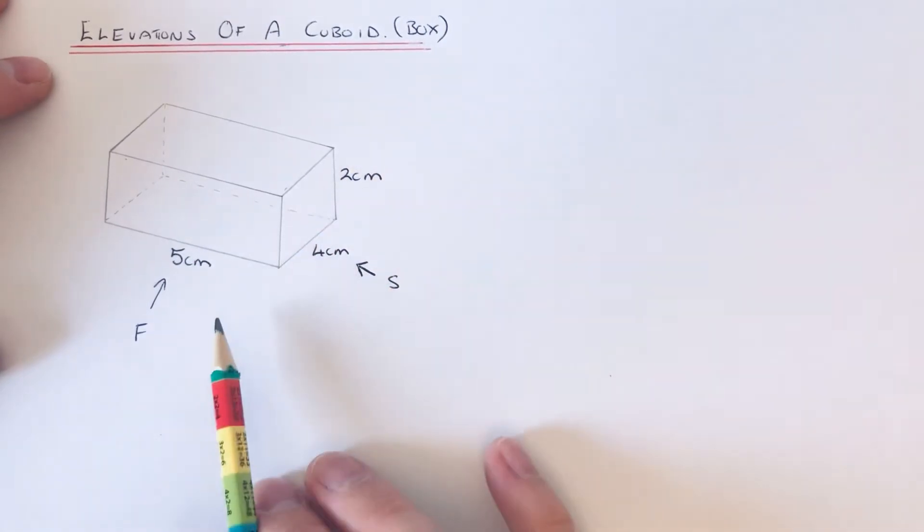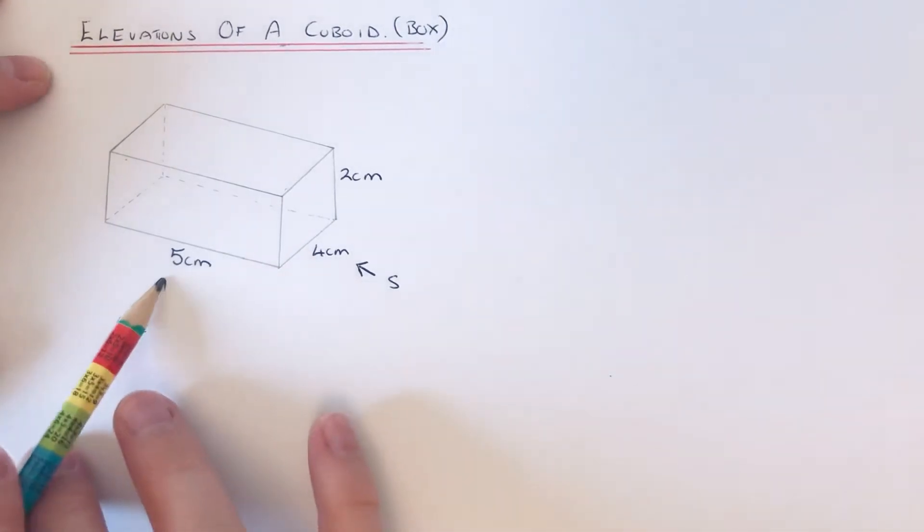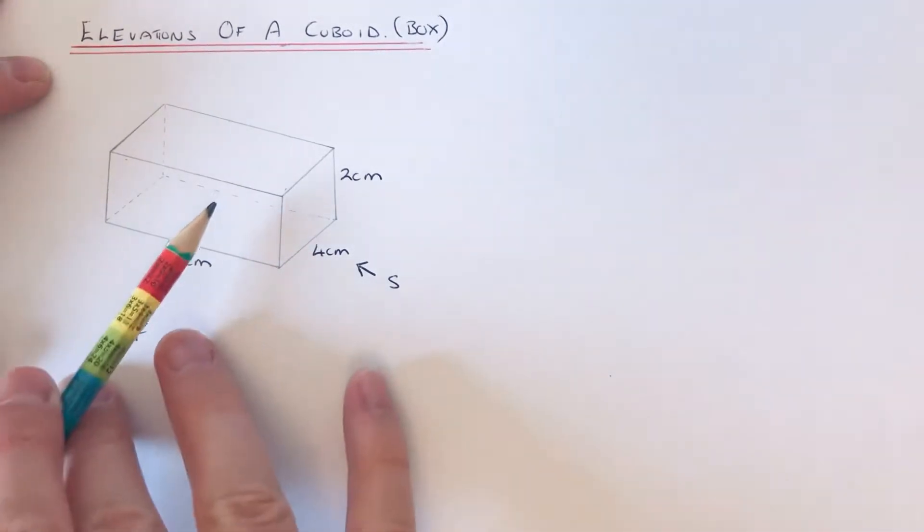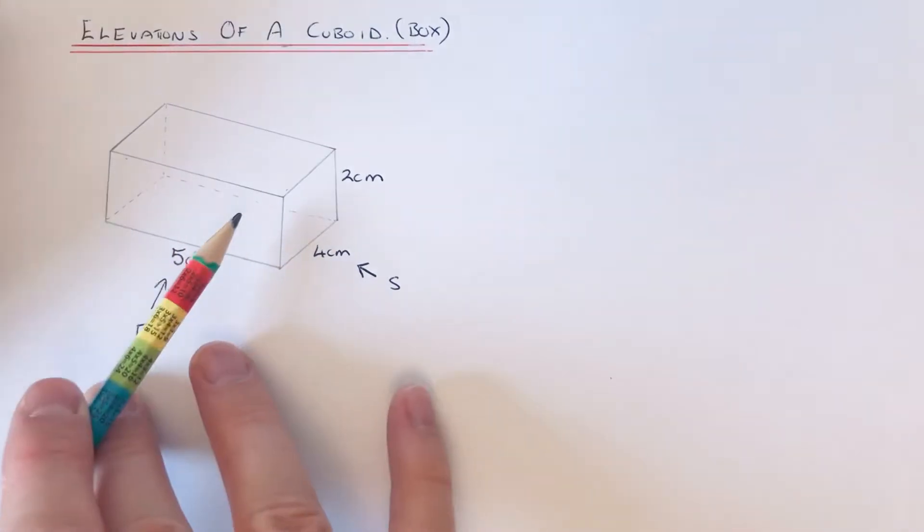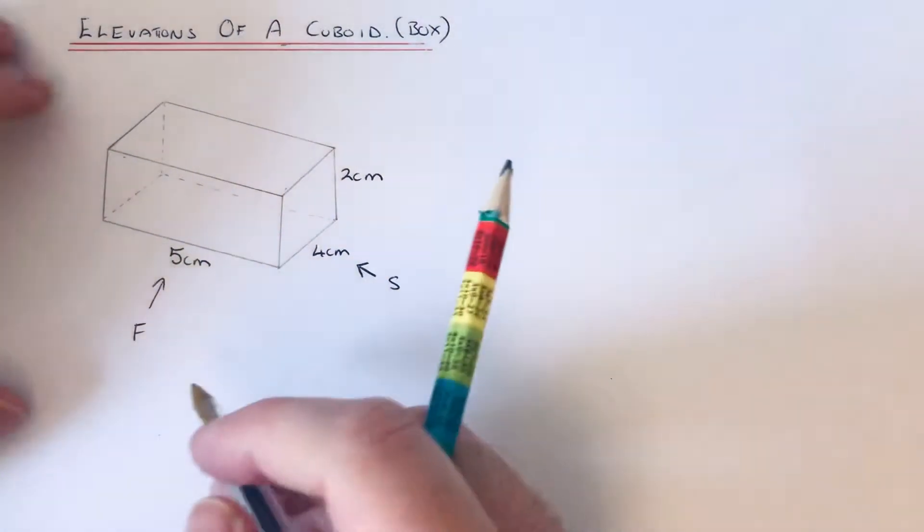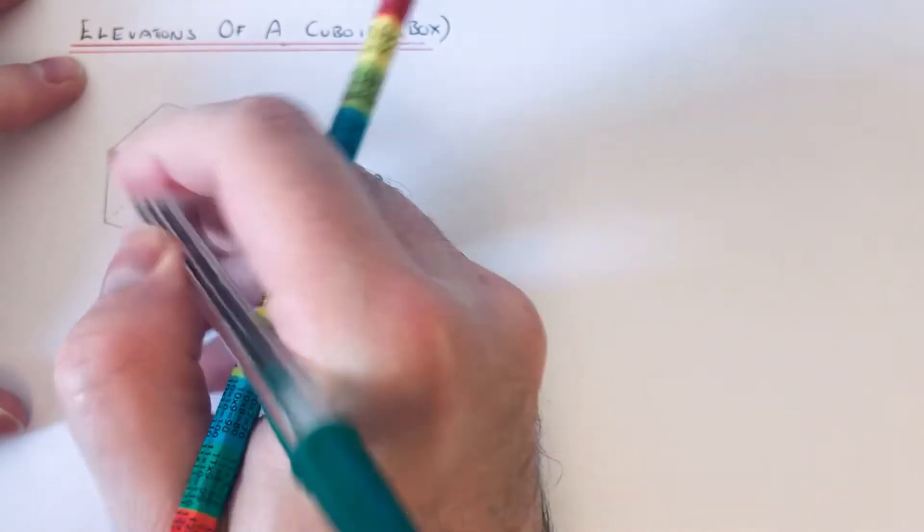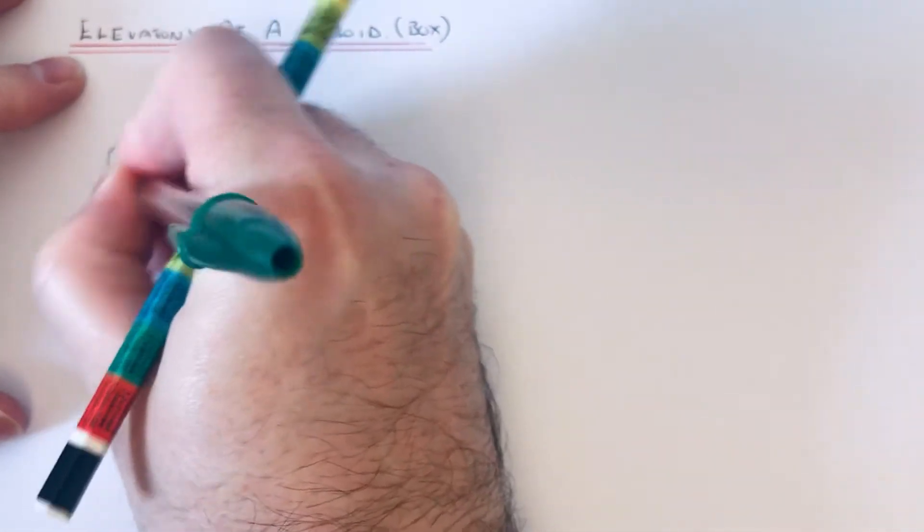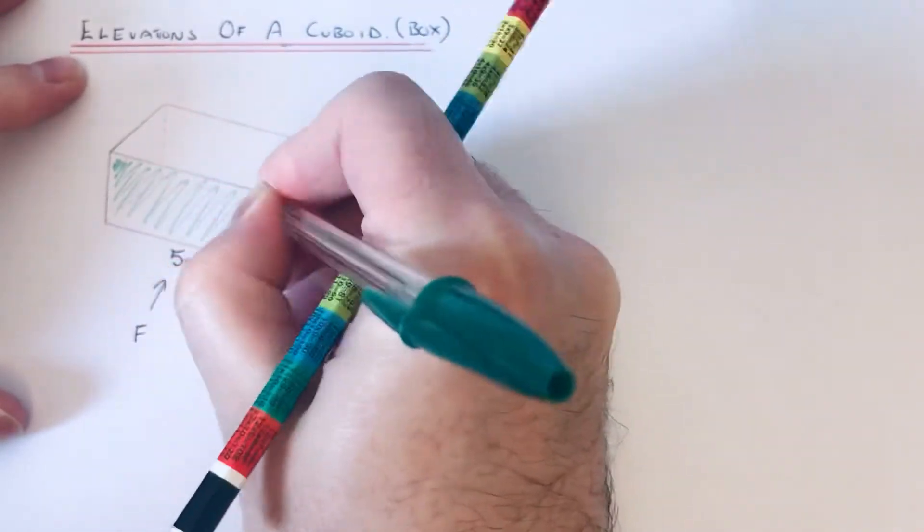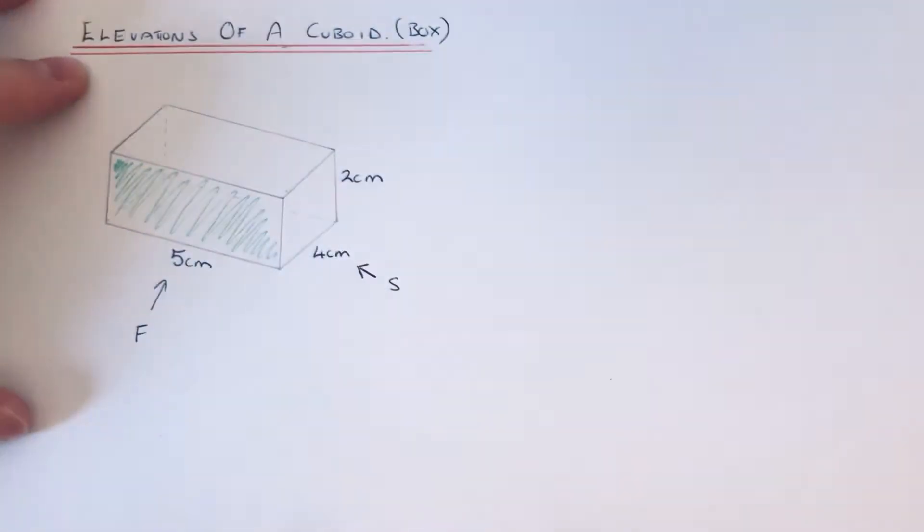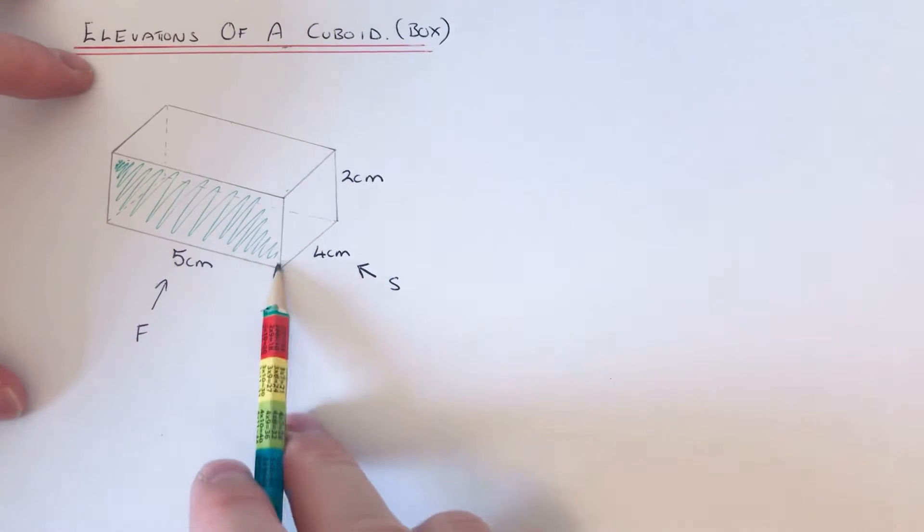Let's start off with the front elevation. The front elevation is what you'd see from the ground looking in this direction here. What you're going to see is a five by two rectangle. Let me just show that in to make it clear. So it's five by two.